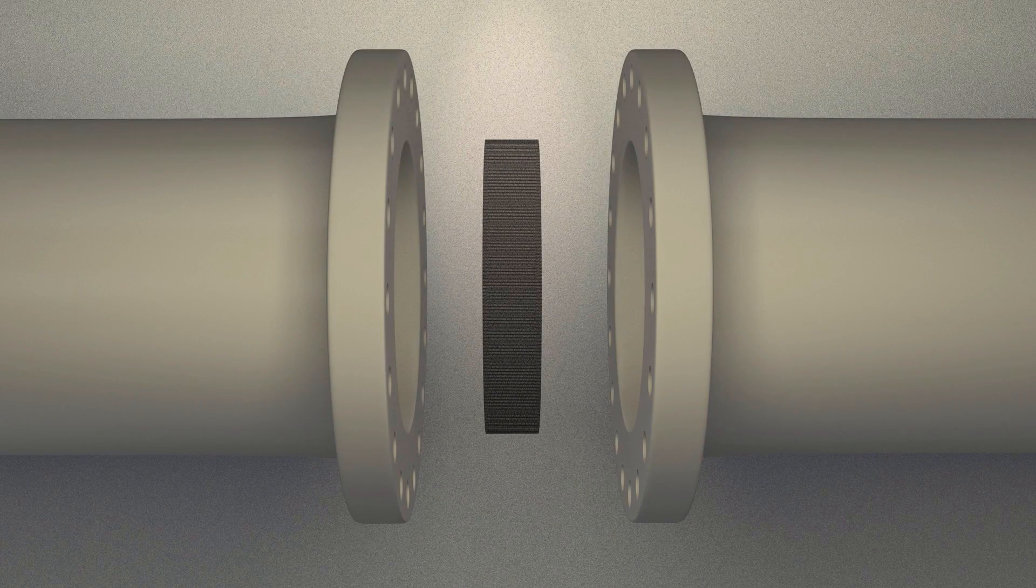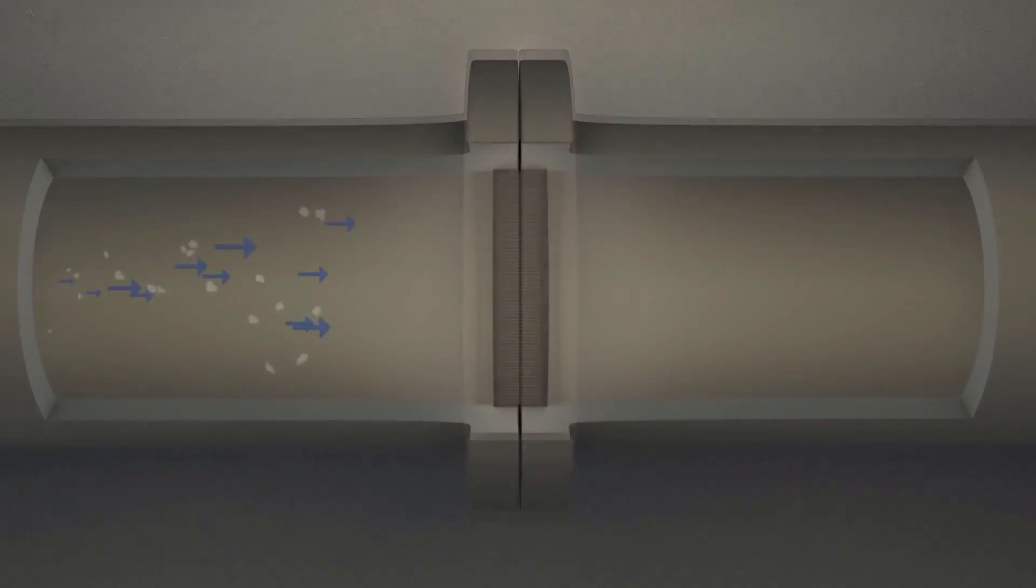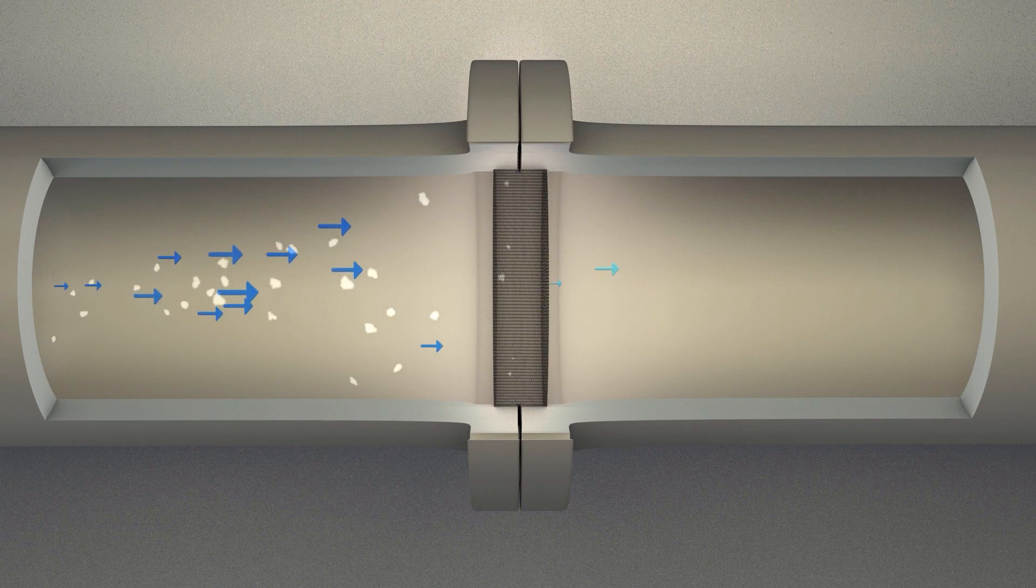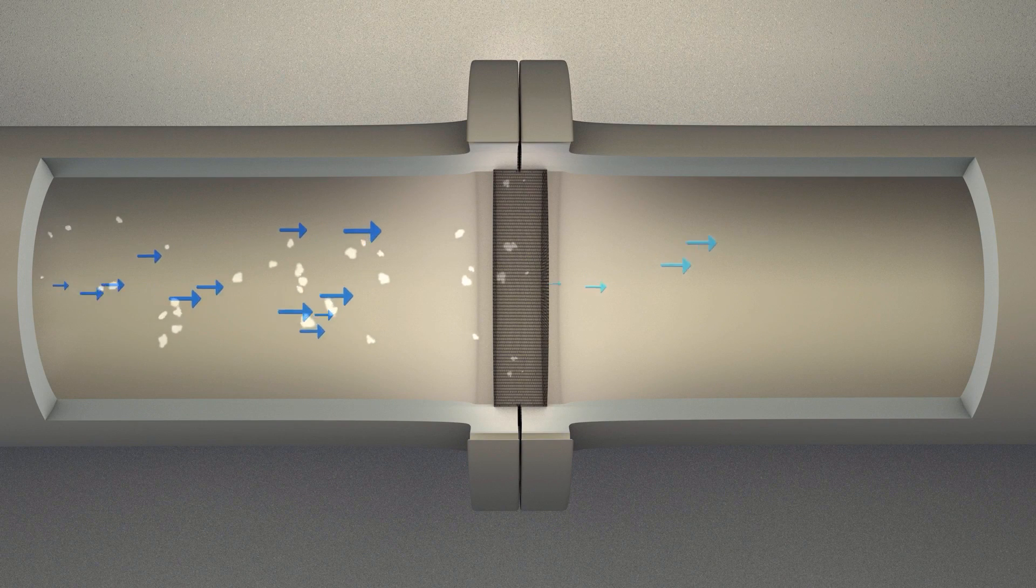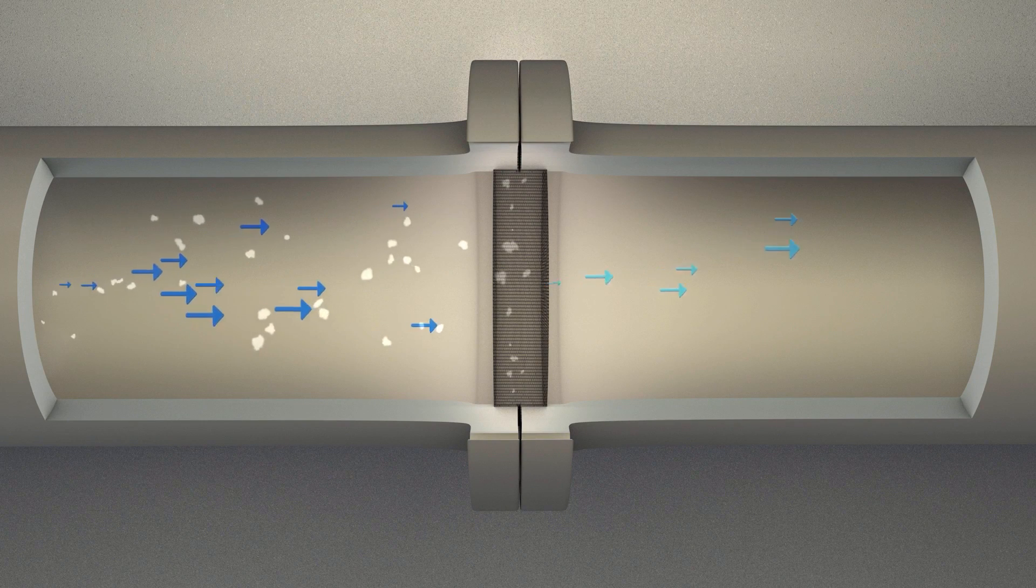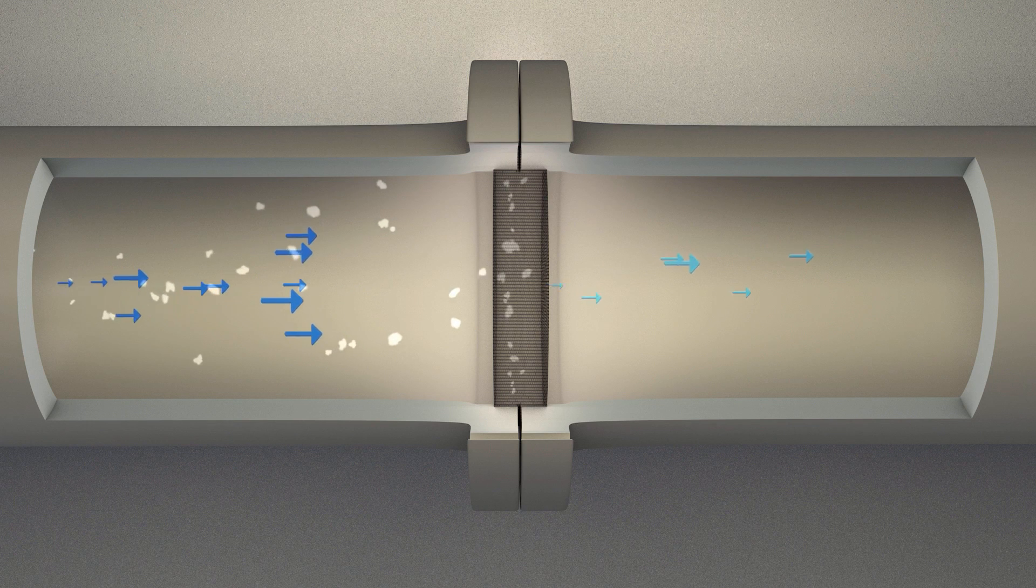Commonly, filters and strainers are positioned to capture solids and particulates. The filter will obstruct the flow through the pipe, lowering the pressure on the downstream side. These effects may vary depending on the filter's construction.